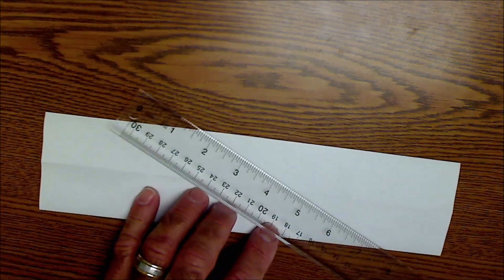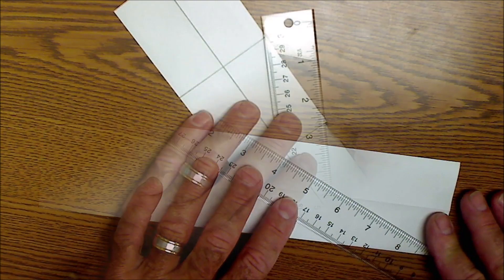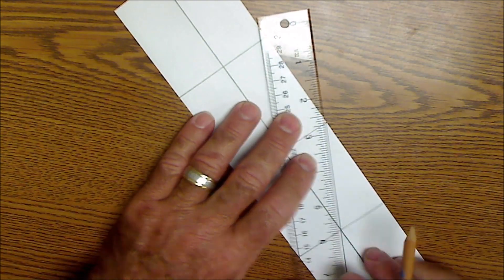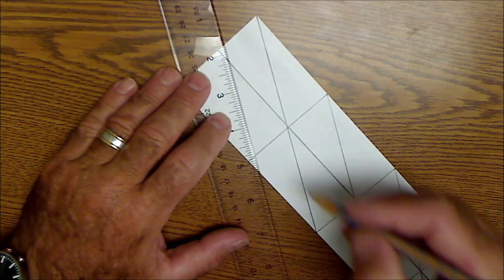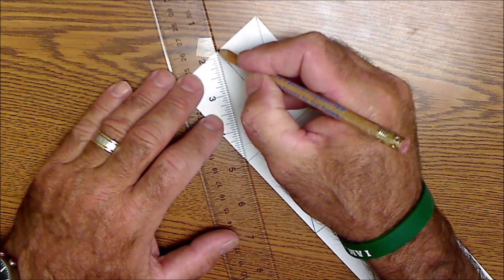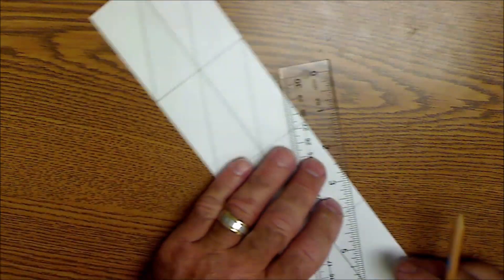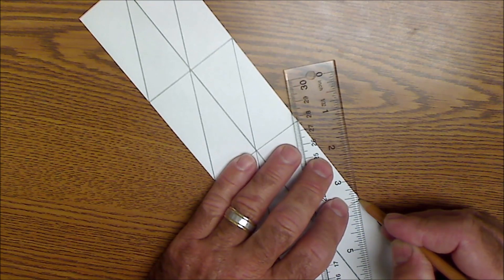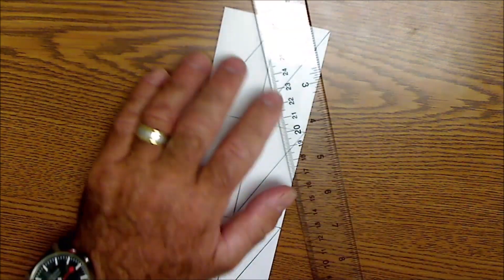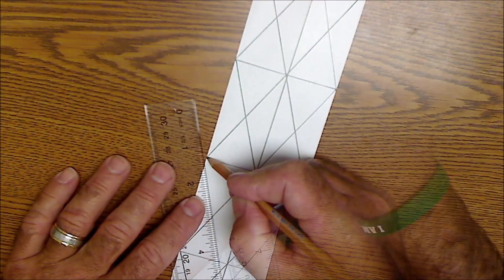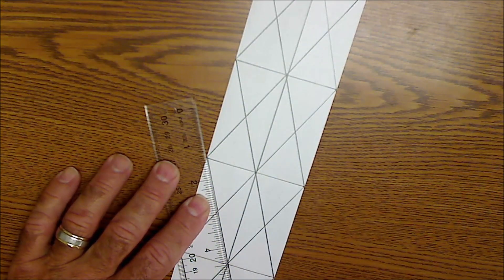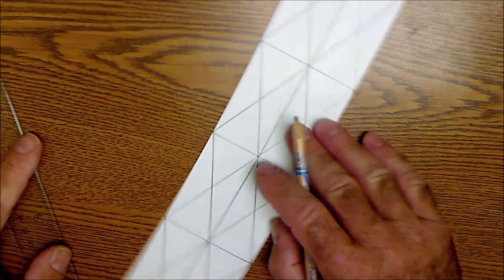Then I should have 8 rectangles. And these rectangles should also be the ratio of 1 to 2. I'm going to draw the diagonals in every one of these rectangles. So there they are, there's my 8 rectangles.